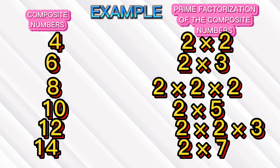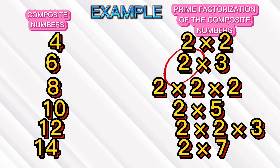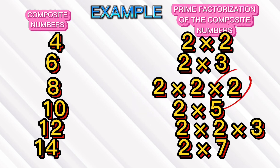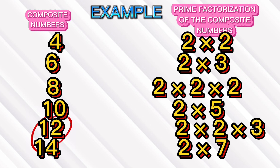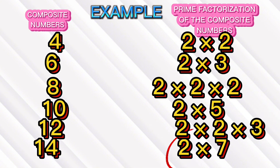Here are the examples of composite numbers and their prime factorization. 4 is 2 × 2. 6 is 2 × 3. 8 is 2 × 2 × 2. 10 is 2 × 5. 12 is 2 × 2 × 3. 14 is 2 × 7.